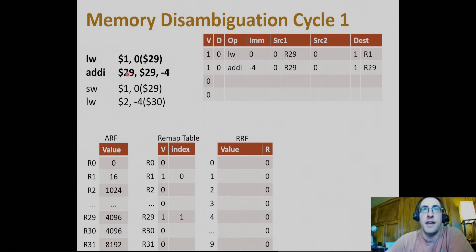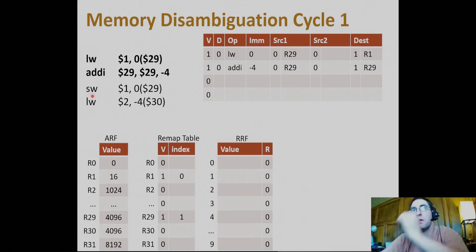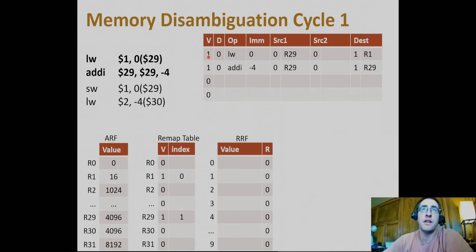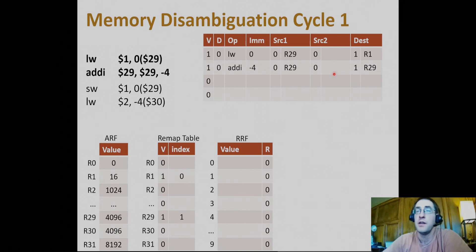The first two instructions get fetched and decoded, going into the issue queue at the end of decode. In cycle one — really cycle three — the second group of store word and load word are inside decode waiting on the next cycle. We're dealing with a one-stage execute pipeline and a two-stage memory pipeline. We have two valid instructions in the issue queue that have not been dispatched: one is a load with immediate zero, one is an add with immediate negative four. The first source register, R29, is available from the ARF for both. They have no source-two register; their destinations are waiting to be written and haven't been renamed.